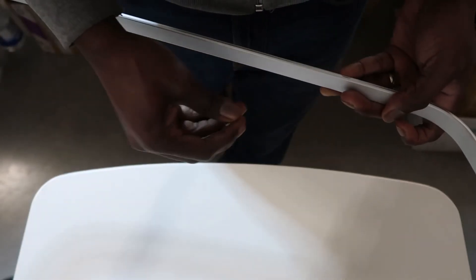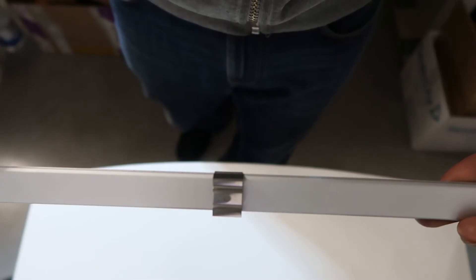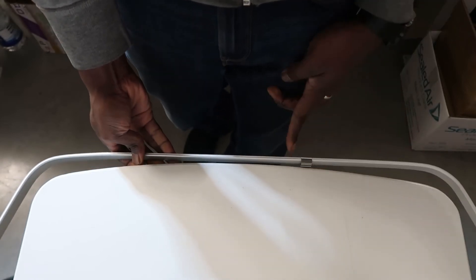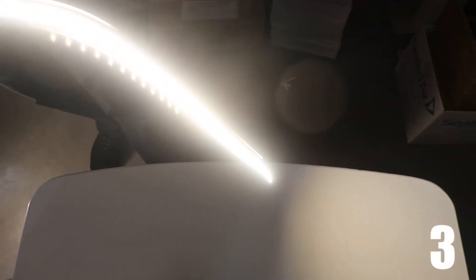Once you've screwed in the mounting clips on the shape, you just go ahead and clip the LED profile onto the mounting clips. Then we do recommend testing the strip before completing installation.